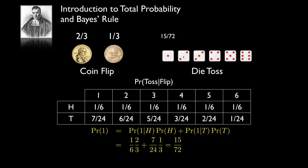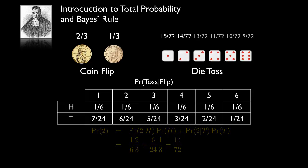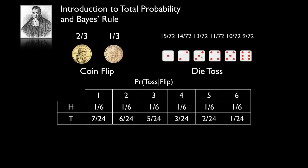The total probability for seeing a two is one-sixth times two-thirds plus six-twenty-fourths times one-third, which equals 14 over 72. Working this out for all possible die outcomes: the probability of seeing a three is 13 over 72, a four is 11 over 72, a five is 10 over 72, and a six is 9 over 72.